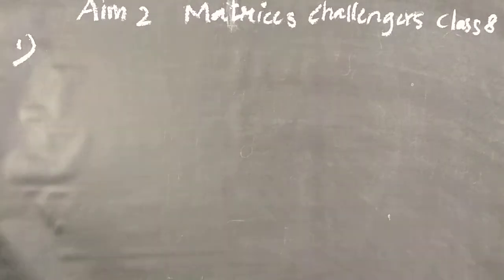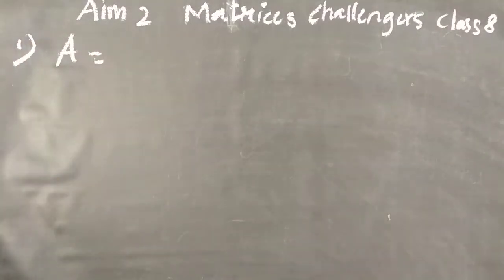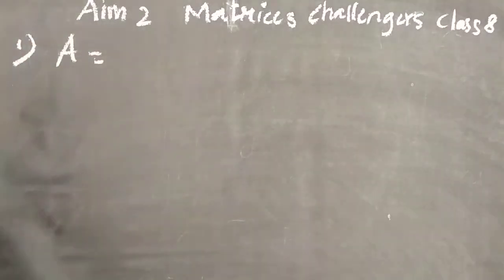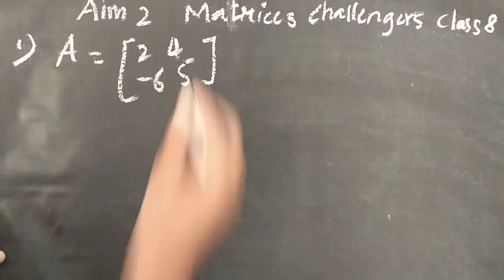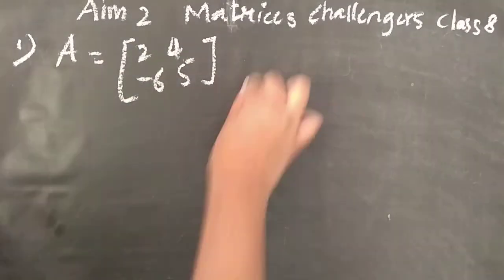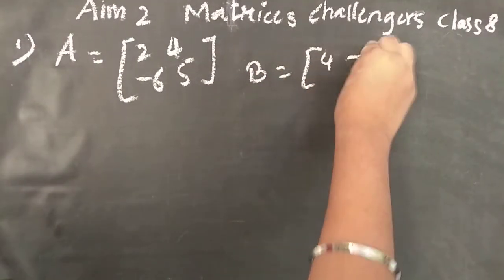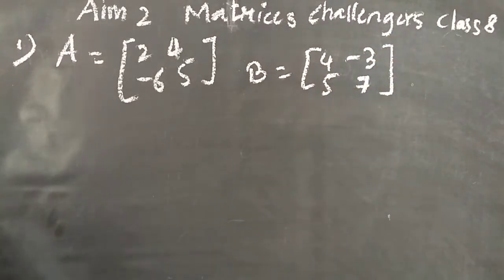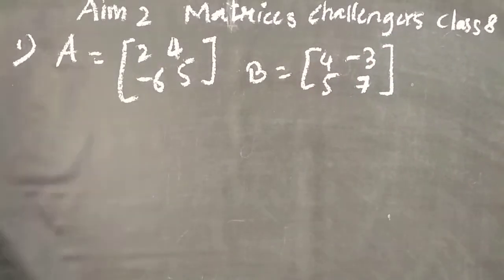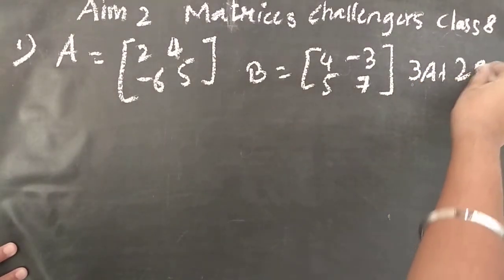For the first question, they have given us two matrices. Matrix A is 2, 4, minus 6, and 5. And matrix B is 4, minus 3, 5, 7. We have to find 3A plus 2B.